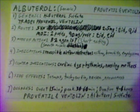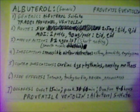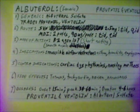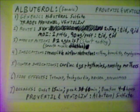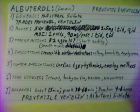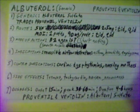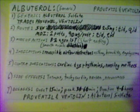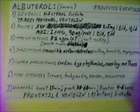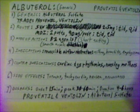Albuterol sulfate can also be given by metered dose inhaler, two puffs of 90 micrograms per puff, TID or QID. Mode of action: it is a beta-2 agonist which causes smooth muscle dilation in the breathing muscles.